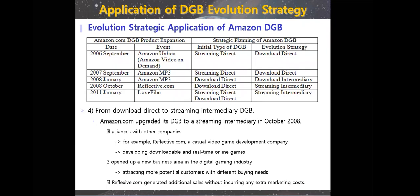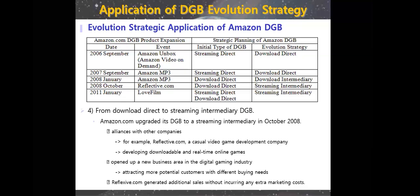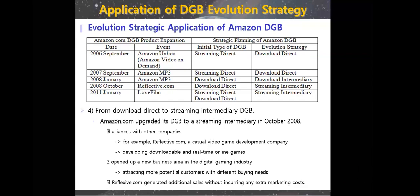The fifth strategy evaluation shows Amazon moving from download direct to streaming immediately. Amazon upgraded their strategy in October 2008, moving to other strategies — for example, partnering with Reflexive.com, an actual video games development company also developing download and real-time online games.